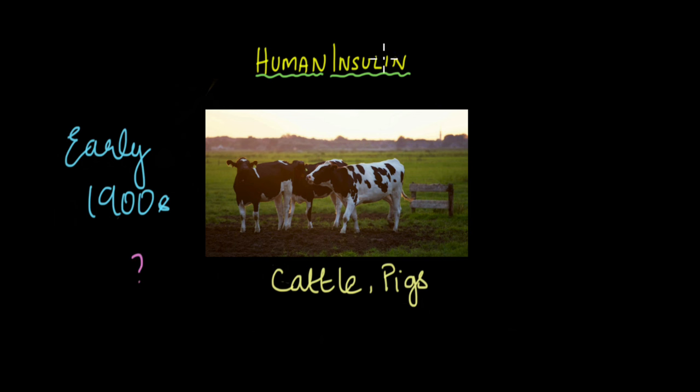Doctors had just figured out that insulin was the magical treatment for diabetes, a condition that affected thousands of people around the world at that time itself. Why cows or even pigs?